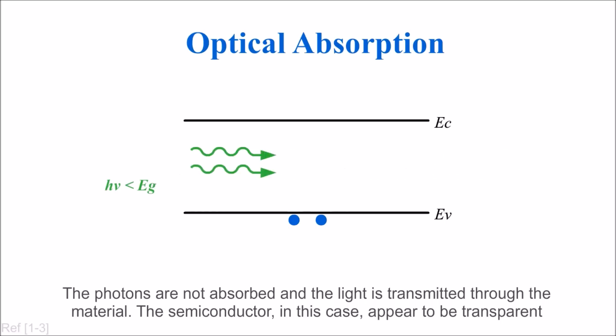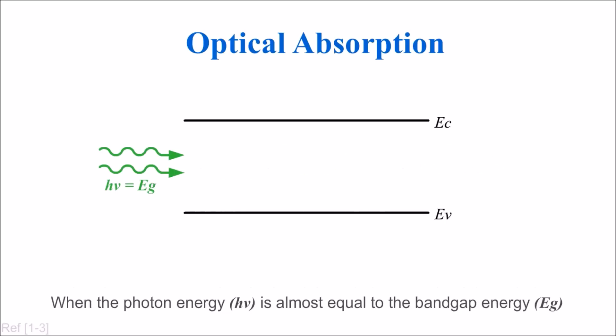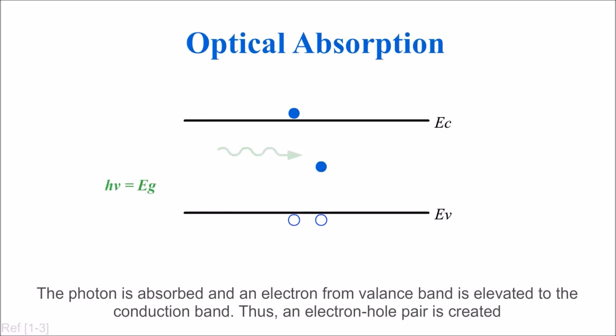When the photon energy hν is almost equal to the bandgap energy Eg, the photon is absorbed and an electron from the valence band is elevated to the conduction band, thus creating an electron-hole pair.